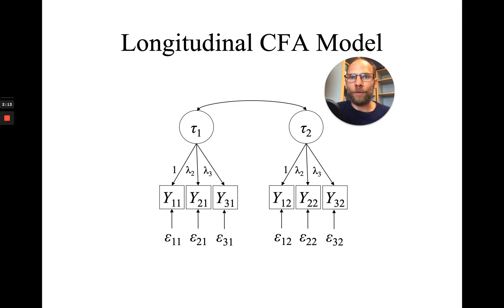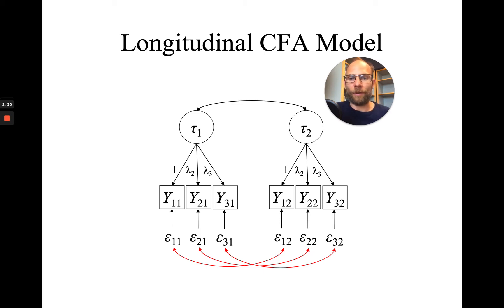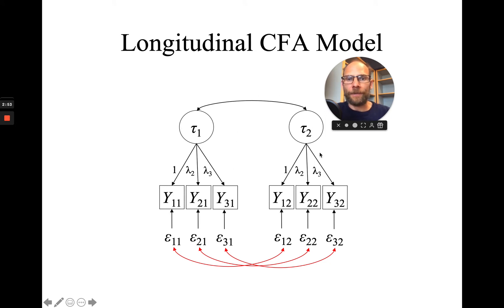What people frequently do in longitudinal models is allow the error variables for a given variable to be correlated across time. So in this case, we would allow the error terms for the first variable to be correlated — epsilon 1,1 with epsilon 1,2 — and then correlate epsilon 2,1 with epsilon 2,2, and epsilon 3,1 with epsilon 3,2. That takes care of item-specific effects or method effects, because those residual associations not captured by the correlation between the state factors are then captured by those correlated errors.